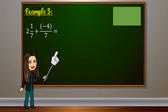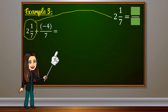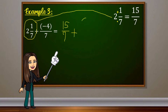In the next example, the first fraction is written as a mixed fraction. We have to first change this mixed fraction into an improper fraction. Copy the denominator, which is 7. Multiply the denominator by the whole number: 7 times 2 equals 14. Plus the numerator, which is 1, gives us 15. So 2 and 1 over 7 is now equal to 15 over 7. Then we copy plus negative 4 over 7.